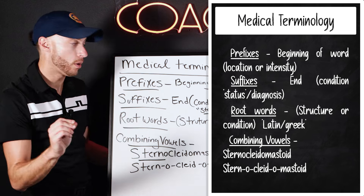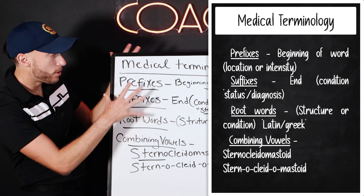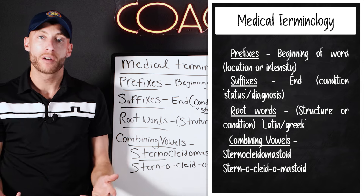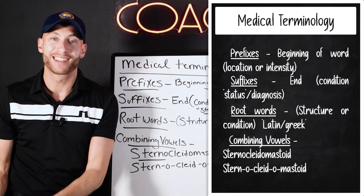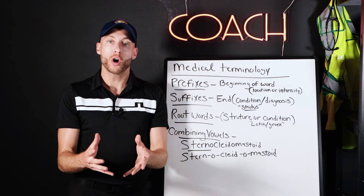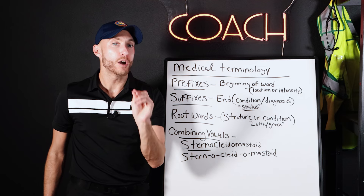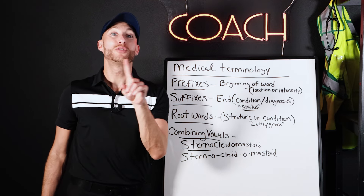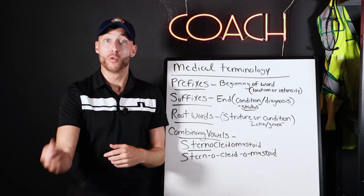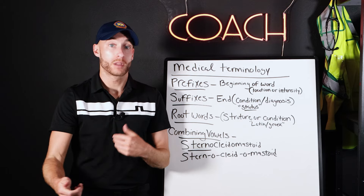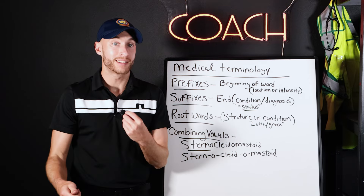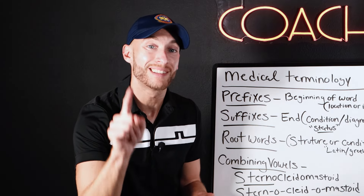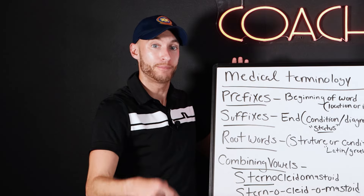Super important here: not every word is going to have a prefix and a suffix. But there will always be a root word with one of the two. So we can have a root word with a prefix, or we can have a root word with a suffix, depending on what we're talking about. I'm going to show you examples of all this right now.